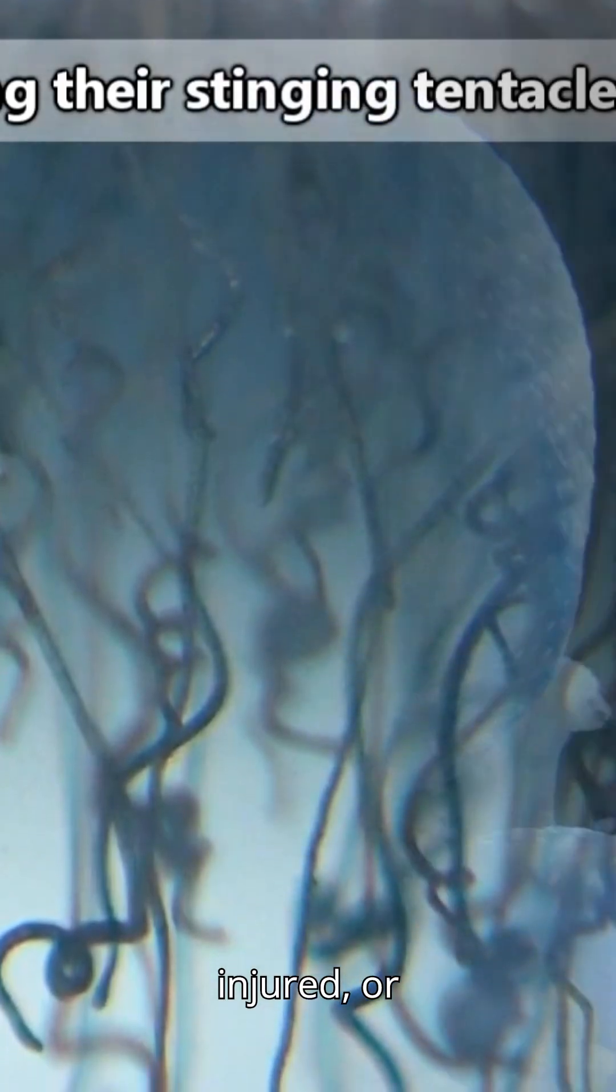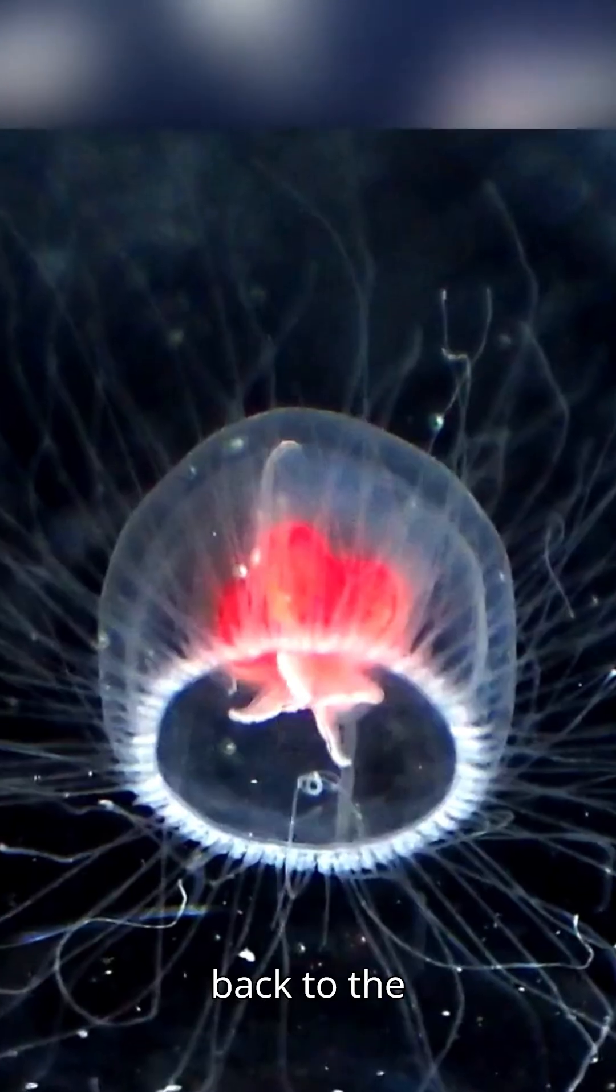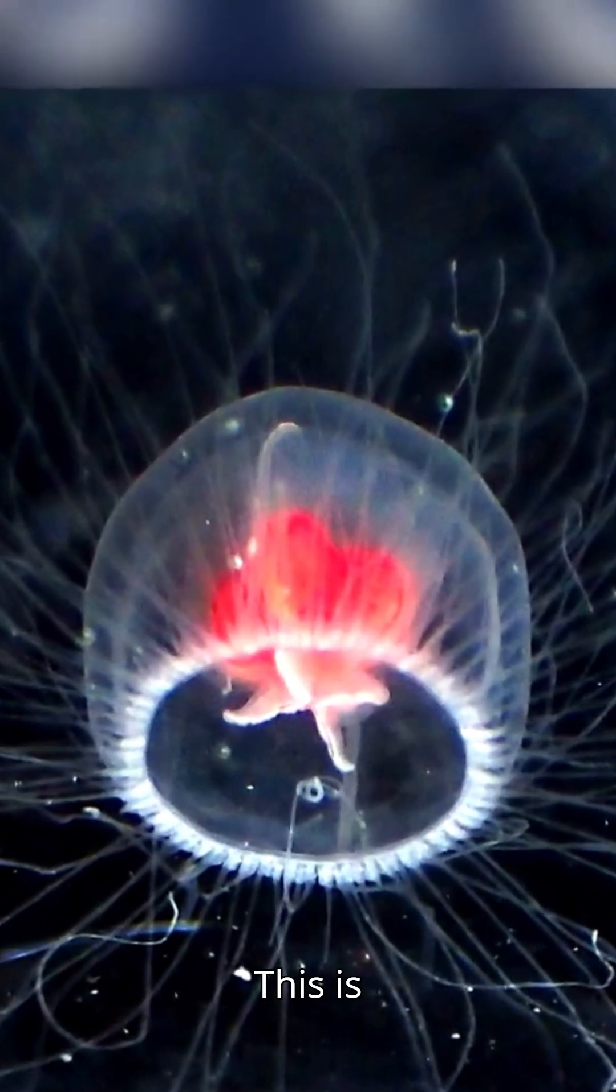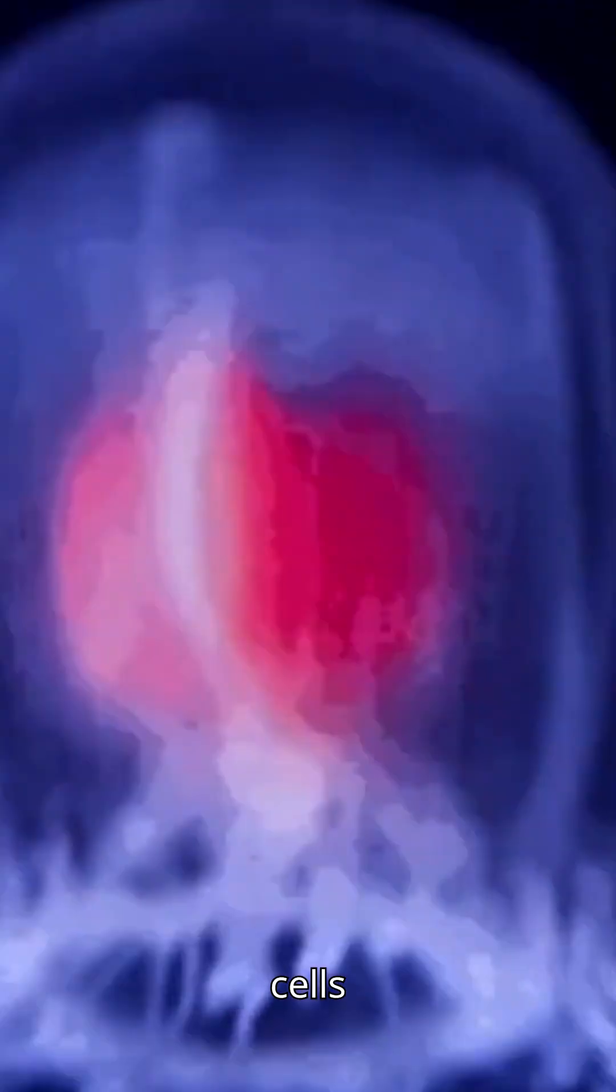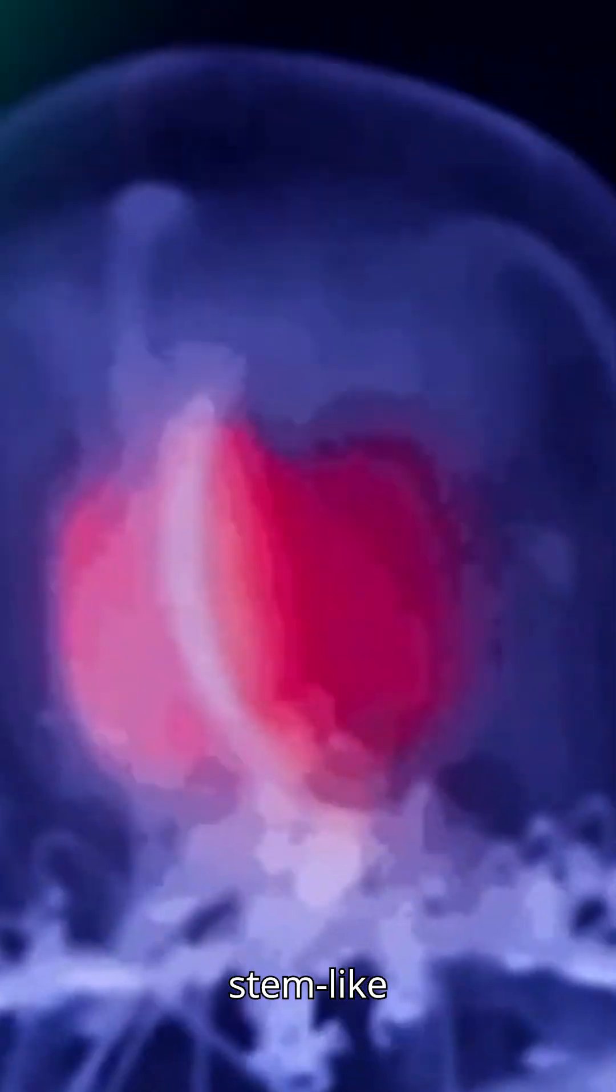When stressed, injured, or starving, it can rewind back to the polyp stage. This is possible because of a process called transdifferentiation, where adult cells transform into younger, stem-like cells.